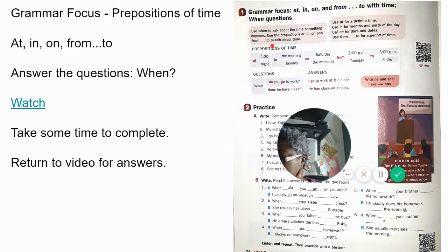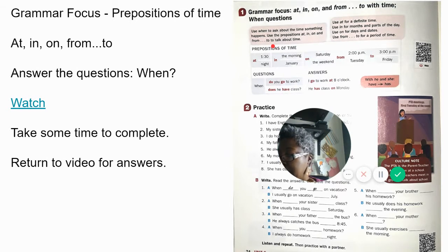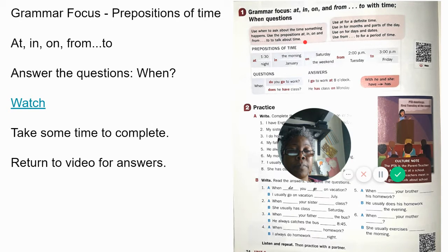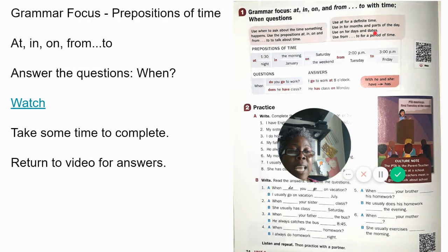The time can be one o'clock, a specific time, a specific day, or a part of the day like 'in the morning.' We use 'at' for a definite time, 'in' for months and parts of the day, 'on' for days and dates, and 'from/to' for a period of time.